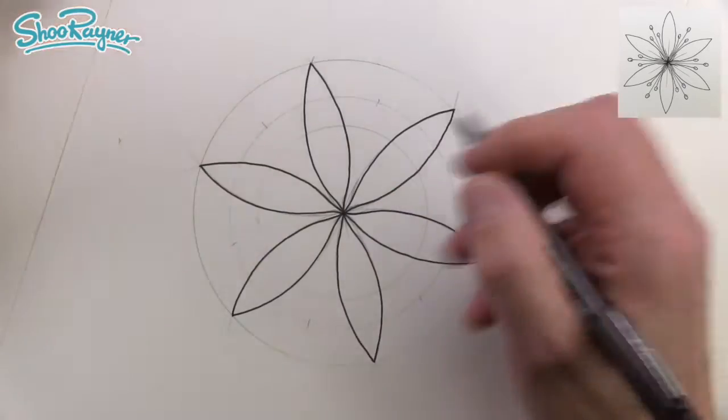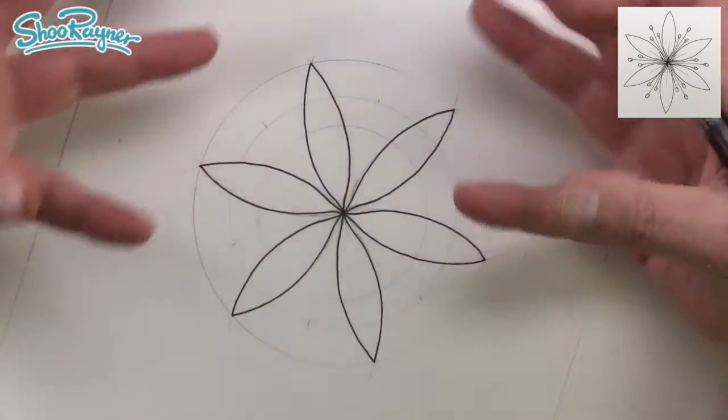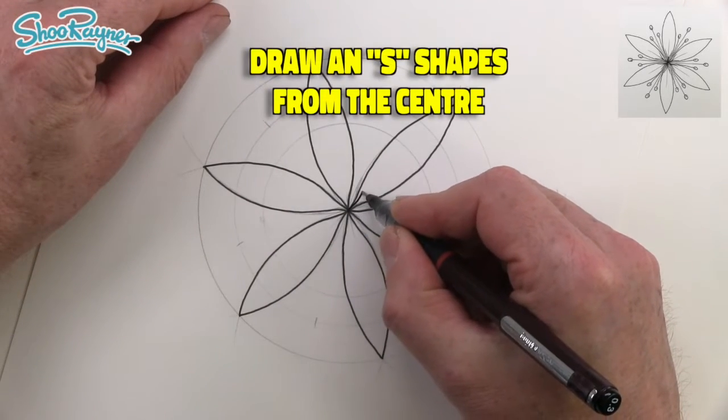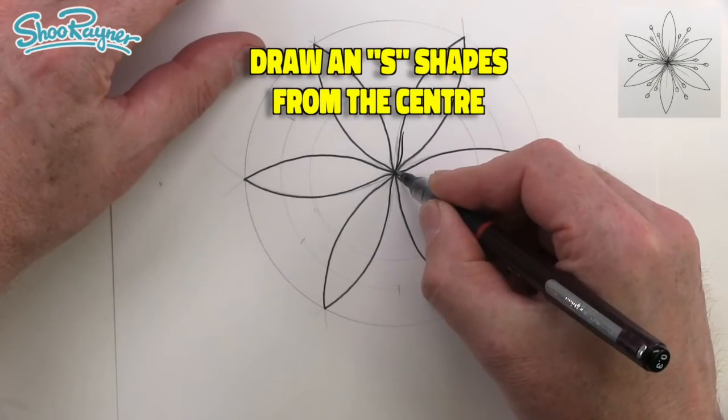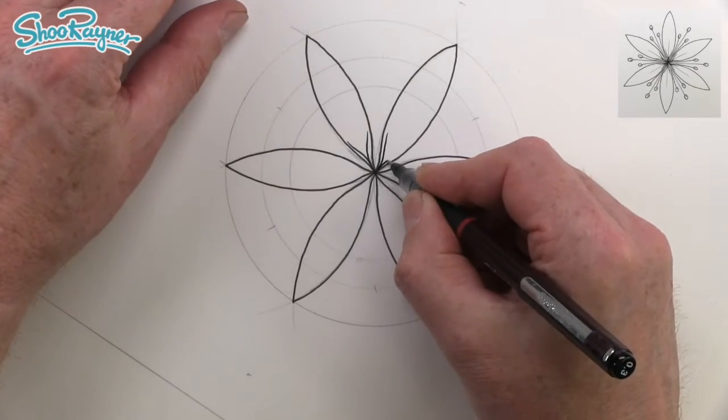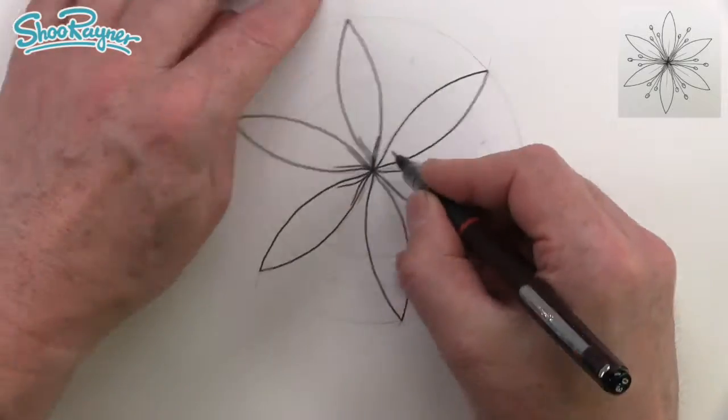Now we want to make these look sort of more like petals which are kind of, they fold in into the centre here. So we're going to come out like that. Another kind of S shape, another kind of S shape like that all the way around.